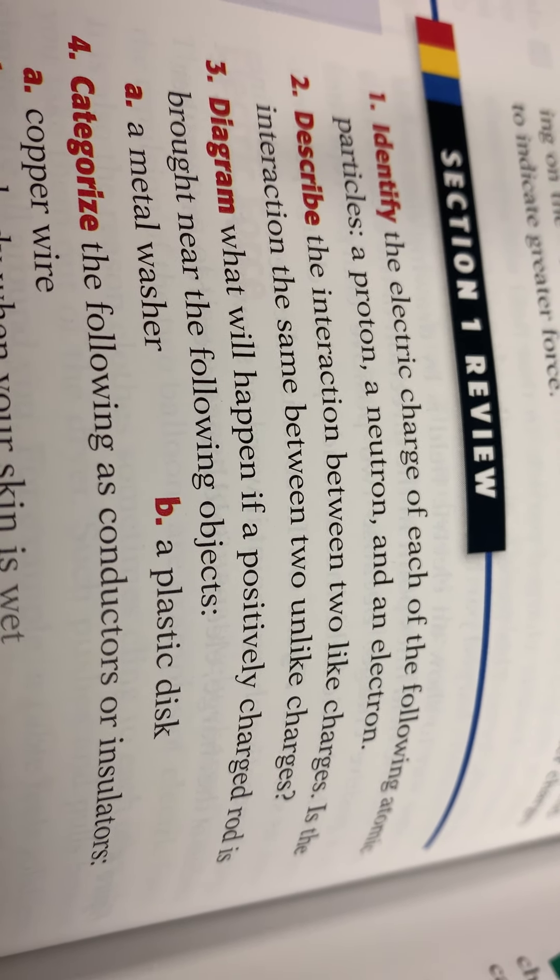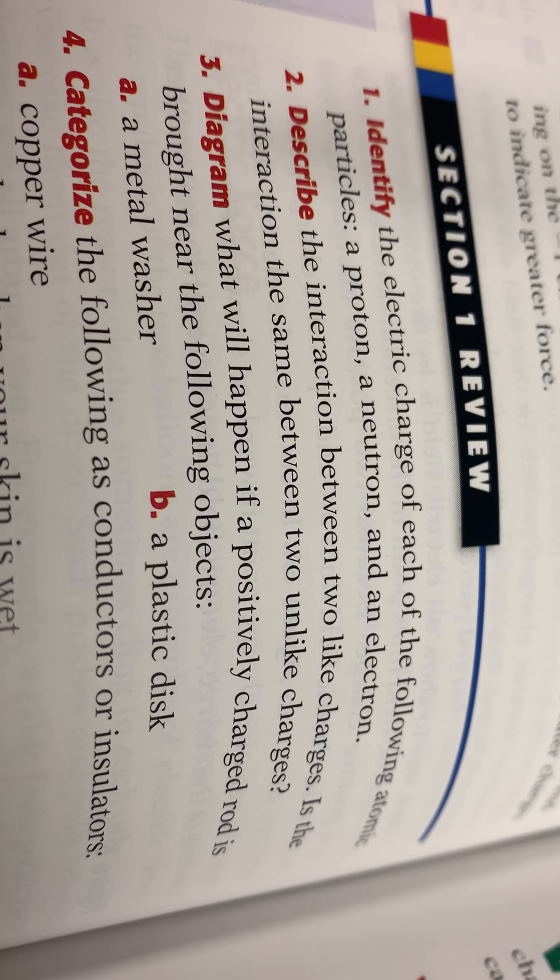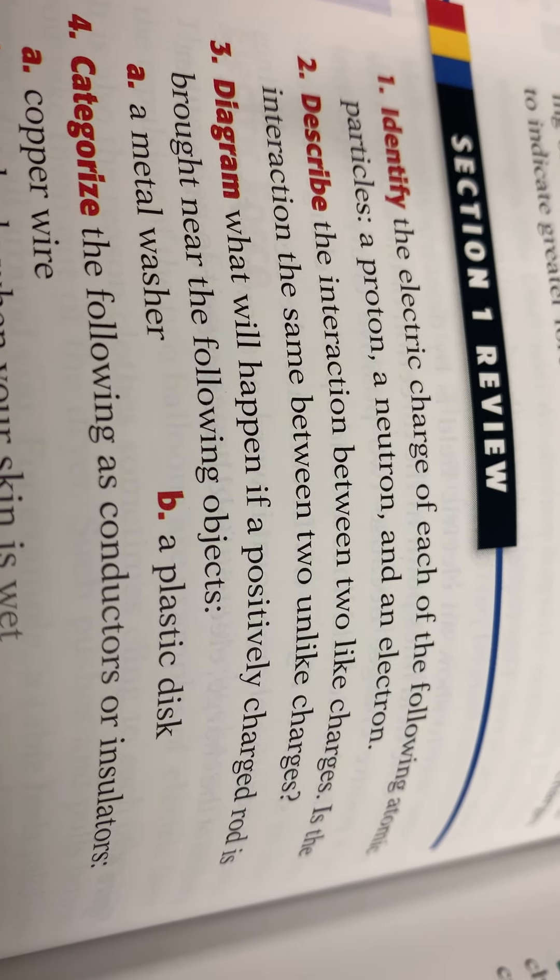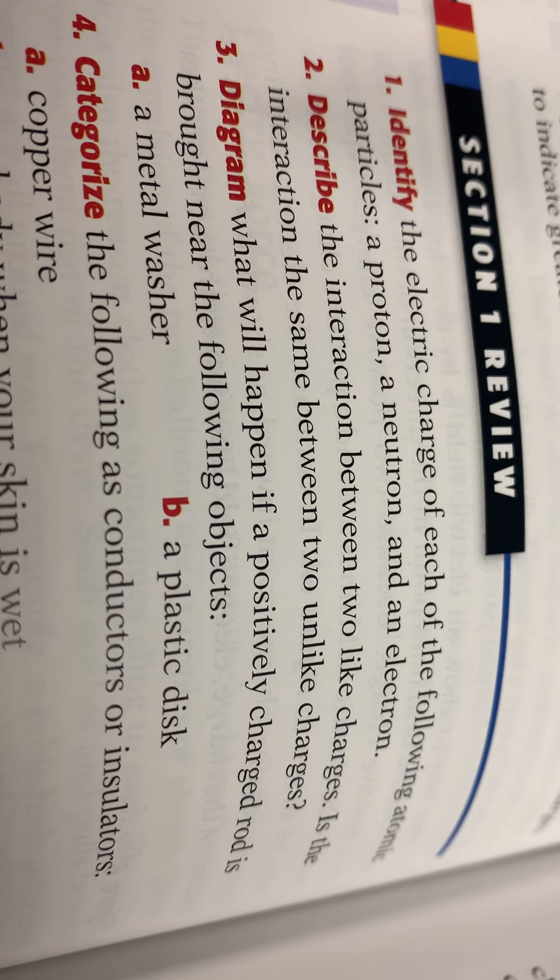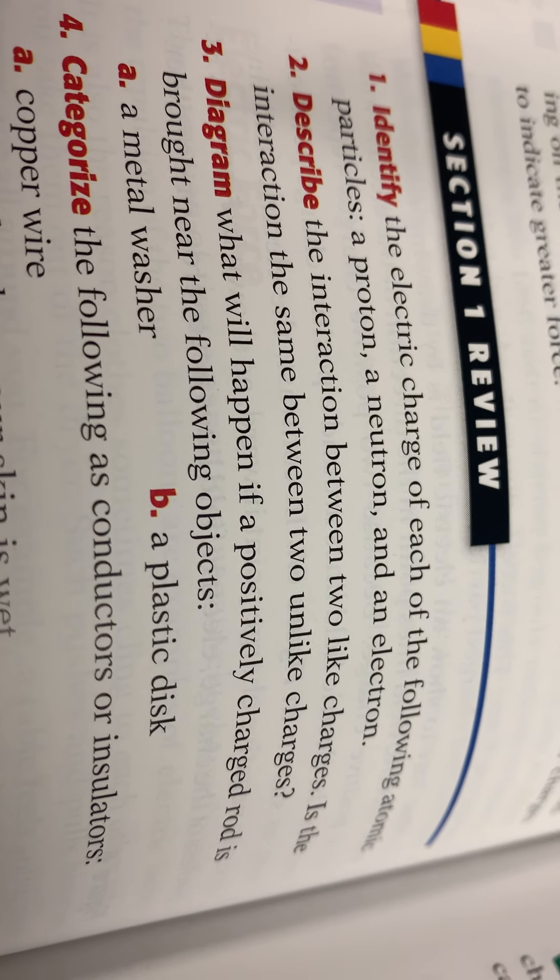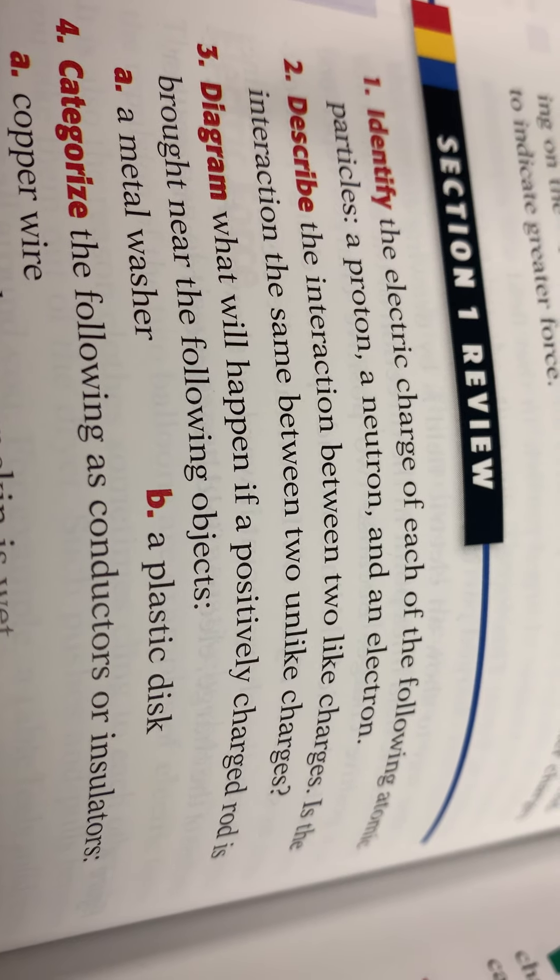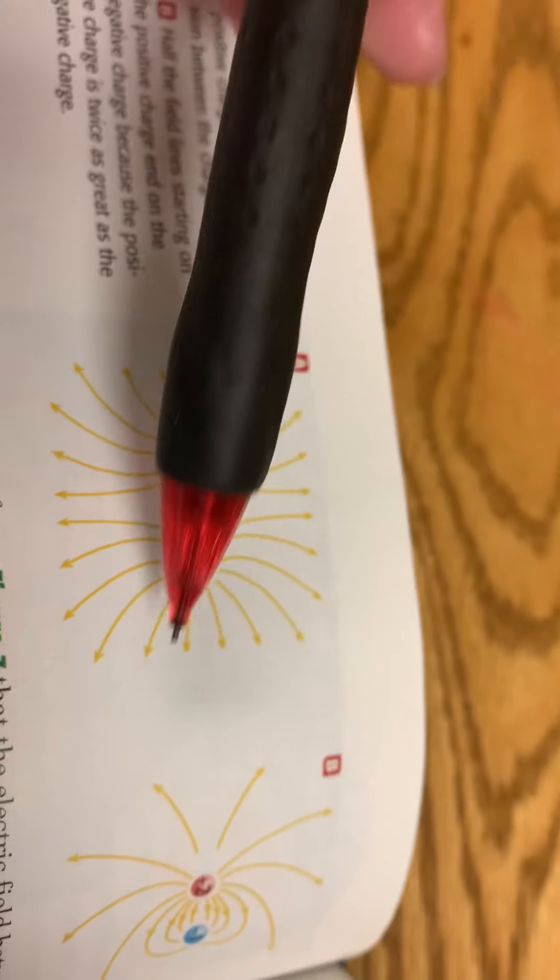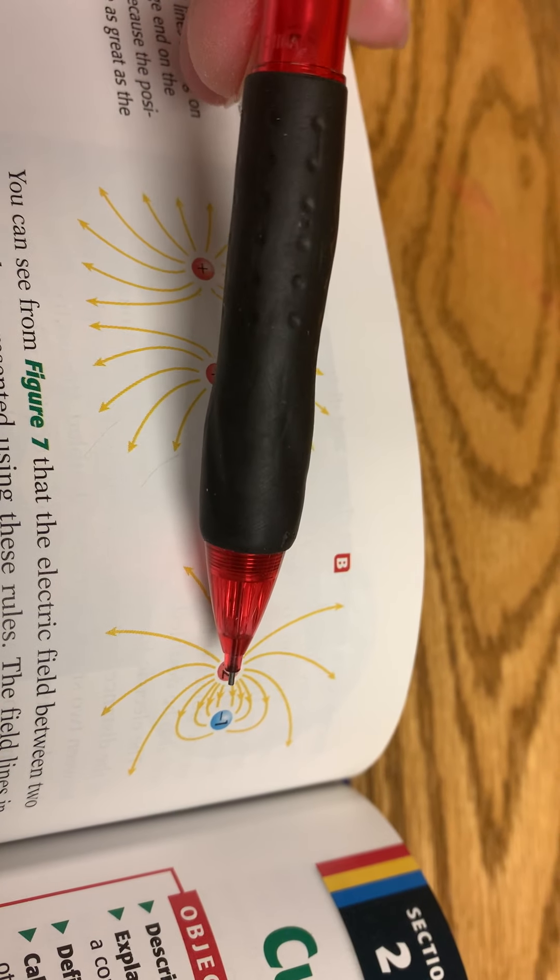Diagram, what will happen if a positively charged rod is brought near the following objects. The drawing should show negative charges on the metal washer nearest to the rod and positive on the side furthest from the rod. That'd be kind of like this right there, positive on one side, negative on the other.